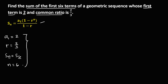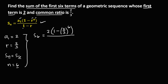Then to find the sum of the first six terms, substitute these values into the formula. So we have s sub 6 equals a sub 1, that's 2, then times 1 minus r, and r is 2 over 3, then to the power n, so to the power 6, because n is equal to 6, then over 1 minus r, so 1 minus 2 over 3.